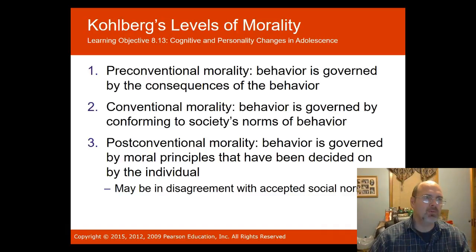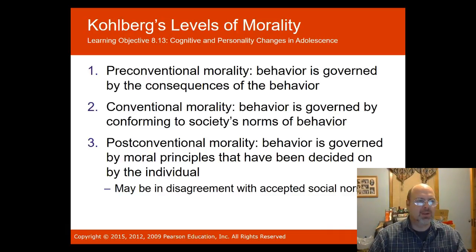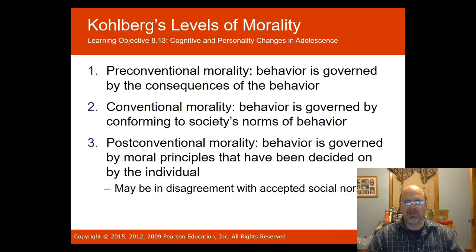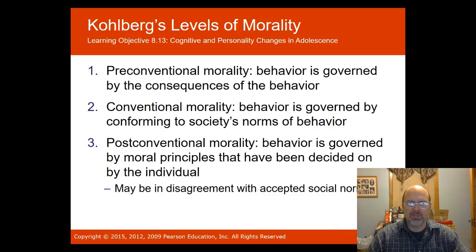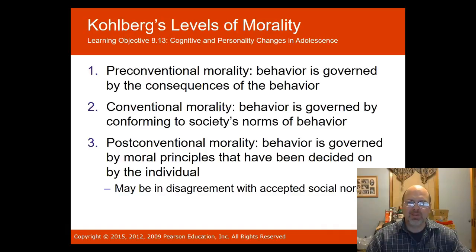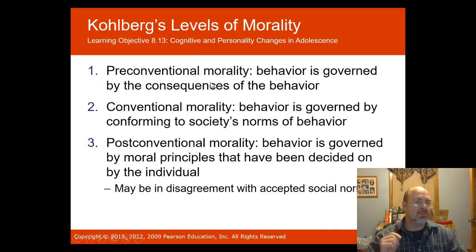Lawrence Kohlberg in 1973 came up with levels of morality using hypothetical moral dilemmas. A critique is that what people say they might do in a hypothetical situation may differ from what they actually do in real life. Carol Gilligan also argued that men and women have different perspectives on morality — men have an ethics of fairness, while women have an ethics of care that can trump fairness. Children are usually at pre-conventional morality, where behavior is governed by consequences.